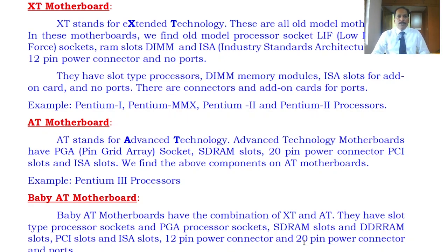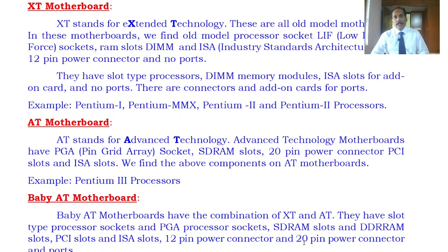The processors used with the XT motherboard are Pentium 1, Pentium MMX — multimedia extended technology — and Pentium 2. So if you have a Pentium 1, Pentium MMX, or Pentium 2 processor, then the XT motherboard was used. That's why it has the ISA expansion slot — only industrial standard architecture — and upgrading is quite difficult with this motherboard.